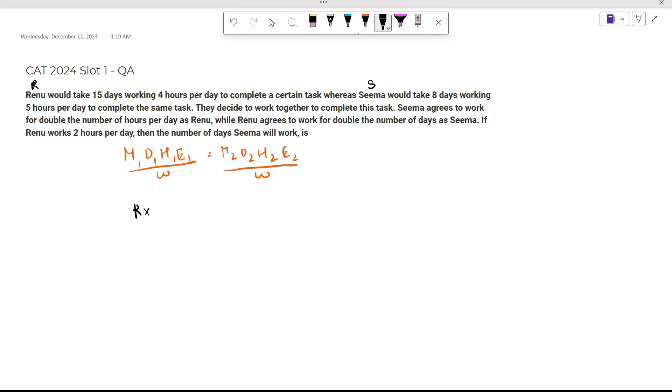In case of Renu, she is working for 15 days, 4 hours a day to complete the work. In case of Sima, she is working 8 days, 5 hours a day to complete the same work. This will help us in getting the efficiency of R and S.